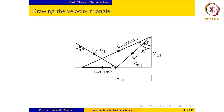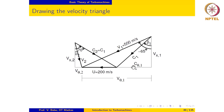We can now complete the exit velocity triangle: v2 equals c2 plus u. The exit absolute velocity vector is drawn accordingly, and the flow angle at exit is positive because velocity vector v2 is in the counterclockwise direction from the reference direction. The segment v_θ2 and the axial component vx2 are identified on the diagram.